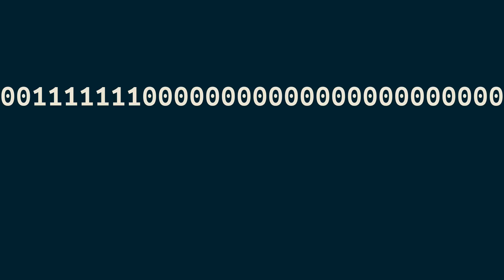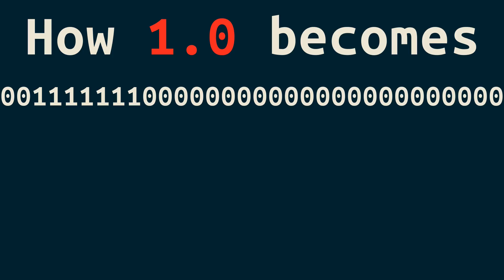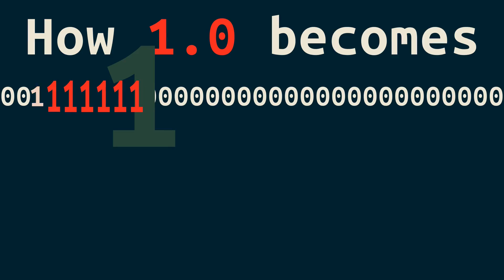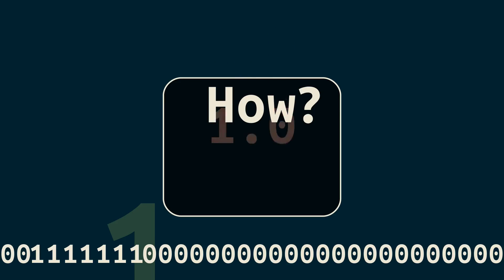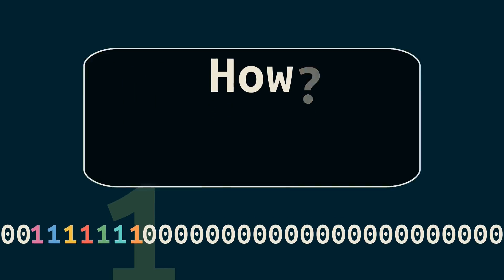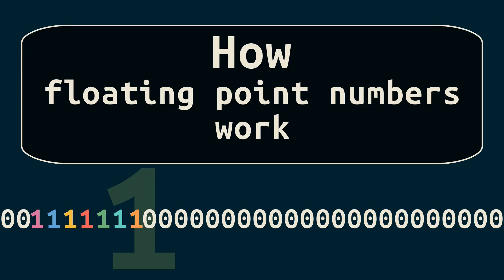This is what you get when you put 1.0 in binary. There are seven ones here — seven! And it gets weirder because there's another one hiding. How do we get eight ones out of 1.0? Let's unravel this mystery by learning how floating point numbers work.